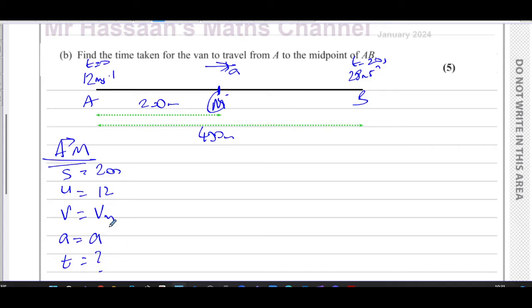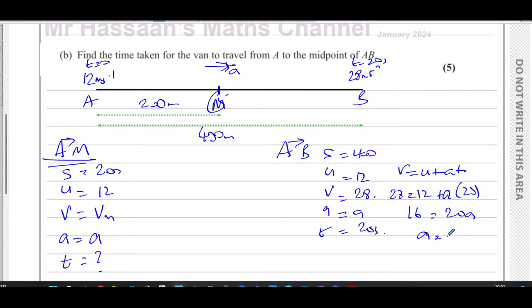Now from these we can find what A is by considering from A to B, because from A to B we have S is 400, U is 12, V is 28, A we don't know, and T is 20 seconds. So the easiest formula to use for finding A here would be V equals U plus AT. So you have 28 equals U which is 12 plus A times T which is 20. So you're going to have 28 minus 12 which is 16 equals 20A, so A is going to be 16 over 20 which is 0.8 meters per second squared. So now we know the acceleration because it's constant all the way through, so this is going to be 0.8 now.